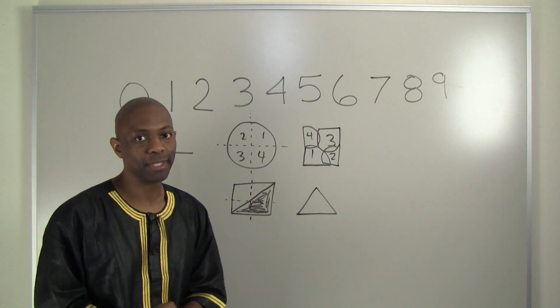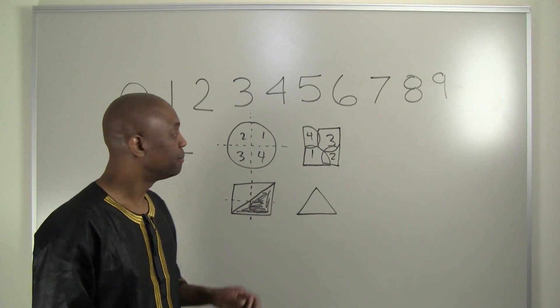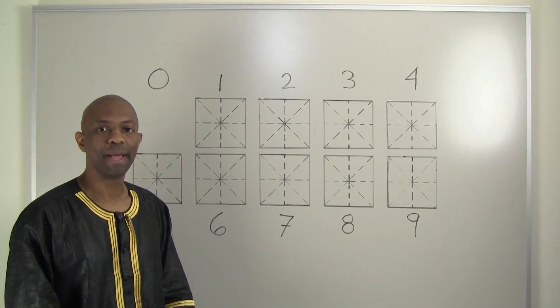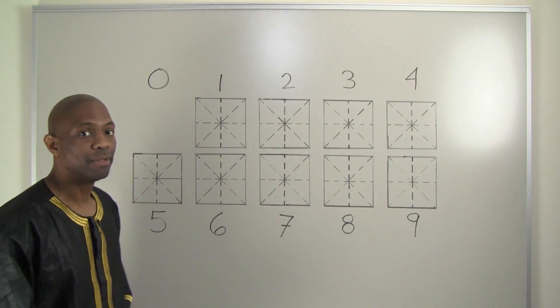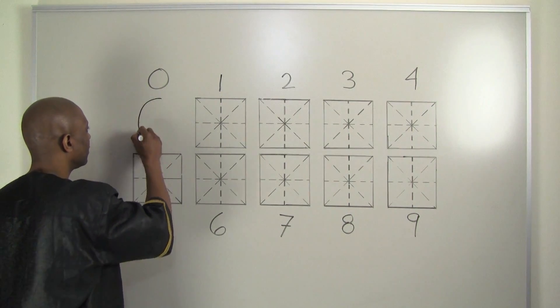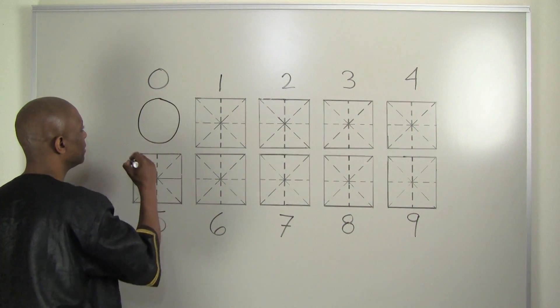But how does this relate to our actual numbers? Well, you'll learn that next. Numbers come from angles. The only shape that we know that doesn't have any angles is a circle. Thus, we get 0.